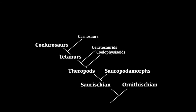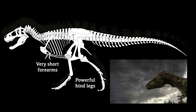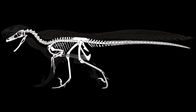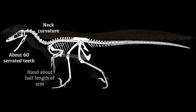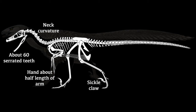After the carnosaurs were the coelurosaurs — the group of dinosaurs in which evidence of downy feathers has been found. The first group is the tyrannosaurs, with powerful hind legs, very short forearms, and long conical teeth. This group includes the famous Tyrannosaurus, Daspletosaurus, and Gorgosaurus. The final group of theropods are the maniraptors, which include dinosaurs with fully fledged feathers. One of the groups here are the dromaeosaurs, more commonly referred to as raptors. These had a distinct curve in the neck, about 60 serrated teeth, hands about half the length of the whole arm, and that iconic sickle-shaped claw on each foot. Examples include Dromaeosaurus, Velociraptor, and Utahraptor.